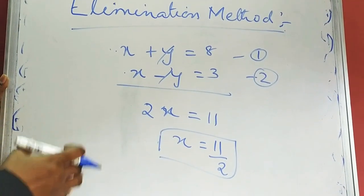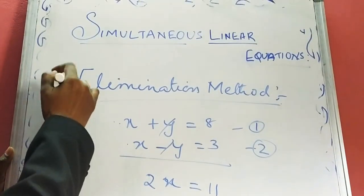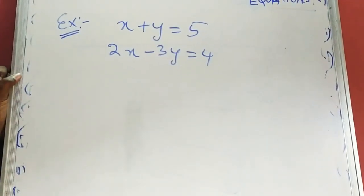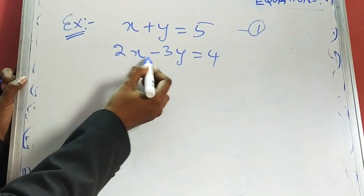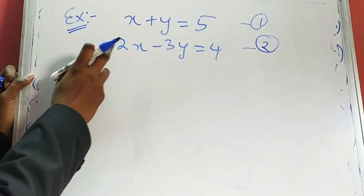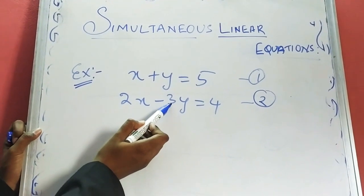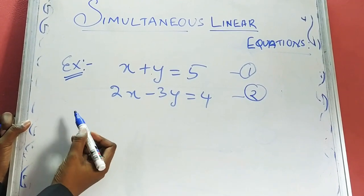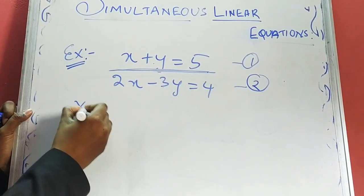Now let me work through an example so you will be able to solve simultaneous linear equations through the elimination method. Here we have two equations: x plus y is equal to 5 as equation 1, and 2x minus 3y is equal to 4 as equation 2. In order to eliminate one of the variables, let us take the y variable. Here we have 3 with y in equation 2, so we must also have 3 in equation 1 for the y variable to be eliminated.